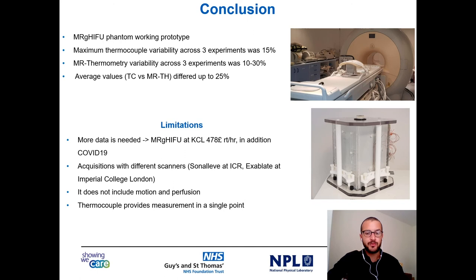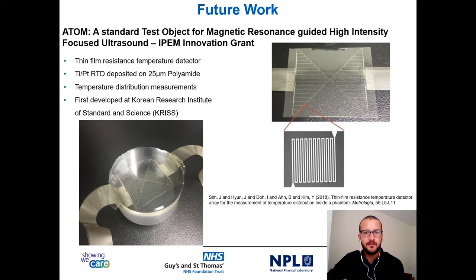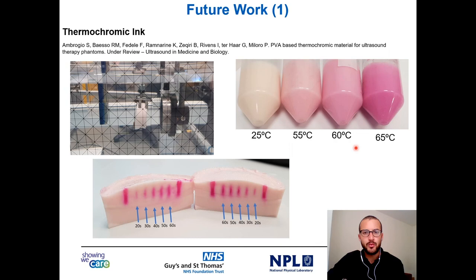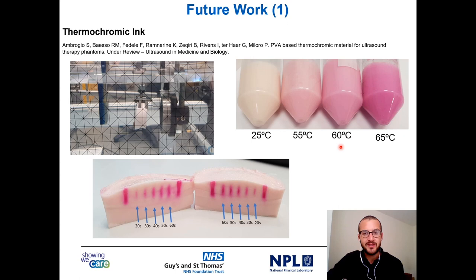It would also be nice to collect and compare data with different scanners and add to the phantom motion and perfusion, which can further challenge the machine. Thermocouples provide measurement at a single point, which is a major limitation. However, we are already moving forward and we received a grant to develop a thin film matrix array sensor for temperature distribution measurements. In addition, we have a paper under review in Ultrasound in Medicine and Biology for the development of a PVA-based thermochromic material, which changes color in relation to temperature in the region of interest of HIFU. This material is quite interesting because it can be embedded in phantoms or in 3D models.